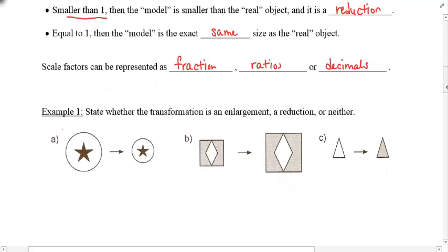So let's take a look at example number 1. And just look at these pictures. We're going to have a start and an end. And tell me whether the transformation is an enlargement, reduction, or neither. So the first object is always the original. And then the second one is what we did to it. So this one, it went smaller.